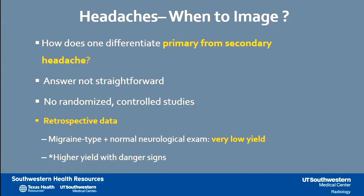What are we looking for with imaging when we're talking about headaches? We're looking for secondary causes — like a brain tumor, an AVM, a bleed — versus primary headache syndromes like migraine, tension, or cluster headaches, which don't generally have imaging findings. The retrospective data shows that at least in migraine and many chronic headache syndromes, if a patient has a normal neurologic exam, the yield of imaging is going to be low.